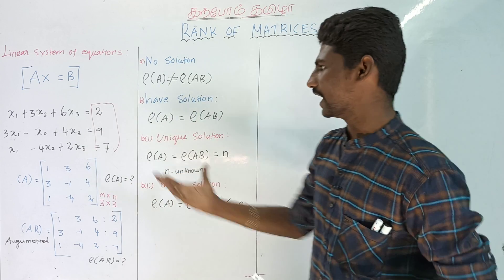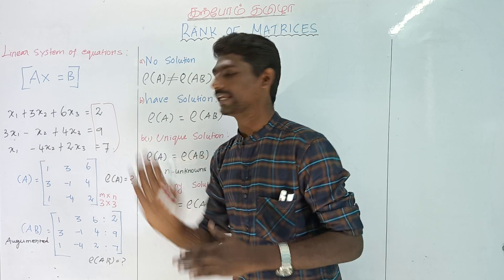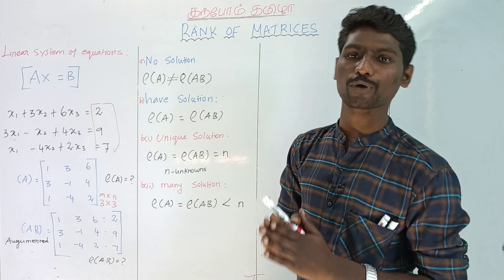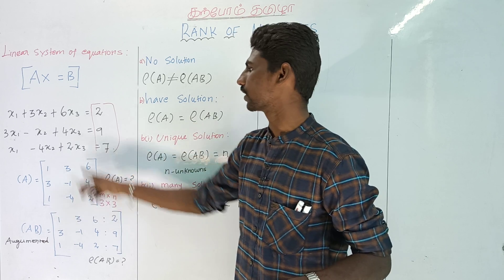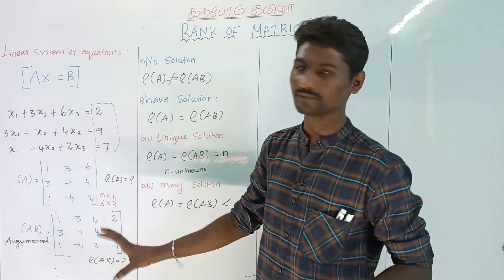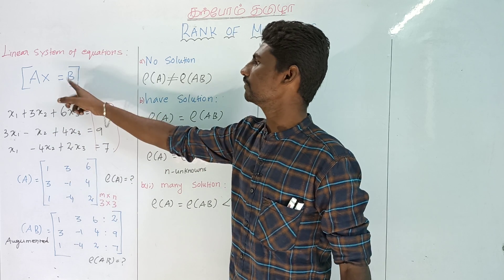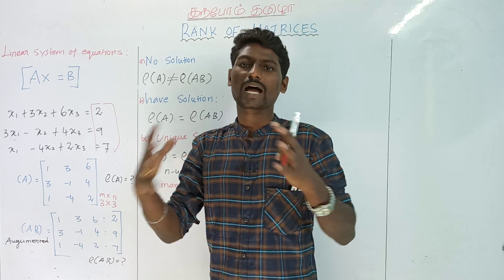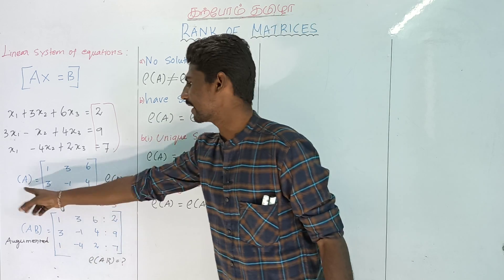Now we will talk about two types of matrices. One is the coefficient matrix, and the other is the augmented matrix. If we take the coefficient matrix A and the constant matrix B and combine them, we get what we call the augmented matrix.